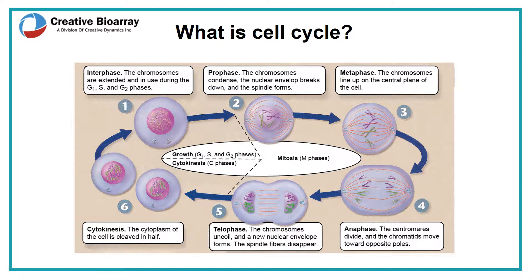There are two phases in the cell cycle: interphase and mitosis. Mitosis, the M phase, is a division of chromosomes in a eukaryotic cell. There are four stages in mitosis: one, prophase; two, metaphase; three, anaphase; and four, telophase.